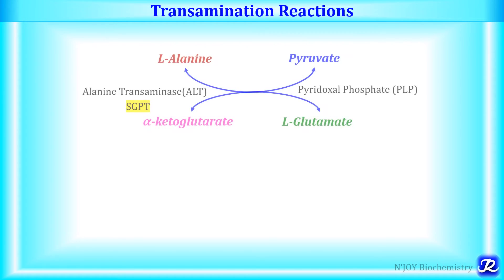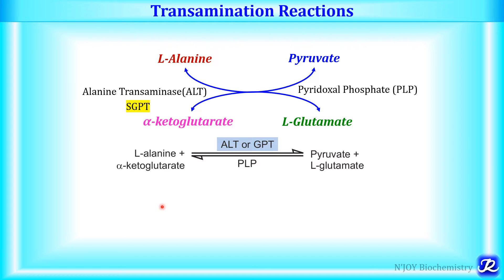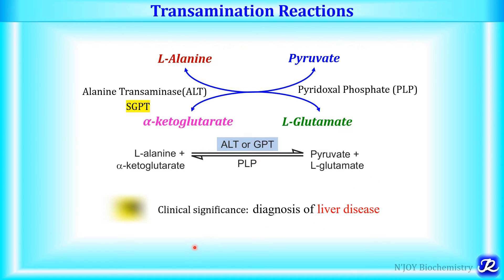There are two important transamination reactions catalyzed by alanine transaminase and aspartate transaminase, which are major contributors. In the first transamination reaction, the amino group from L-alanine is accepted by alpha-ketoglutarate to form glutamate and pyruvate. This reaction is catalyzed by alanine transaminase, that is ALT, which was previously called SGPT (serum glutamate pyruvate transaminase). This reaction can be written as: alanine + alpha-ketoglutarate → pyruvate + glutamate. ALT has clinical significance as it is used in the diagnosis of liver disease.